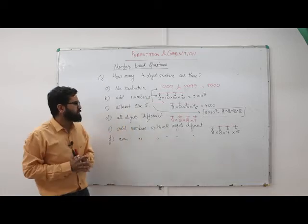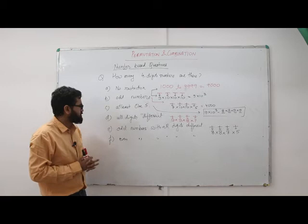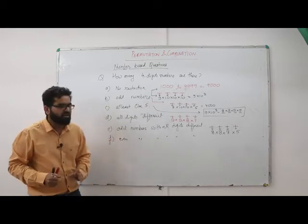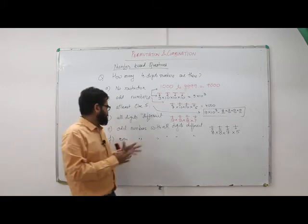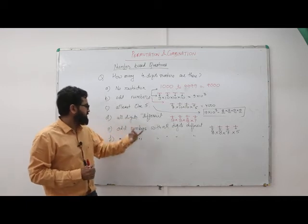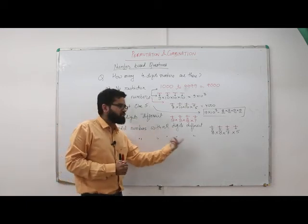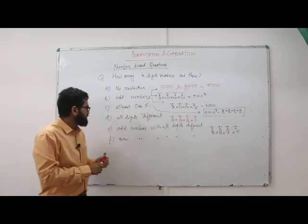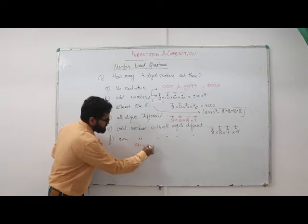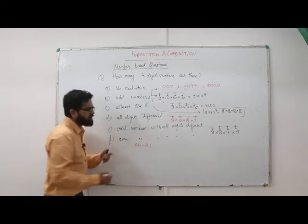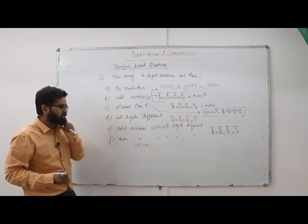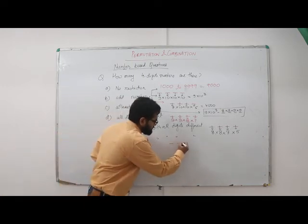One simple way to find even numbers with all digits different is d minus e — that is, all-digits-different numbers minus odd-all-digits-different numbers. But if we solve it directly using position, let's look at that case.